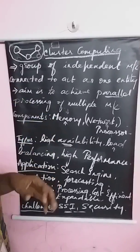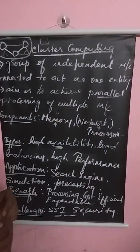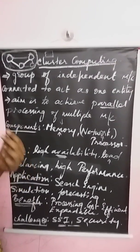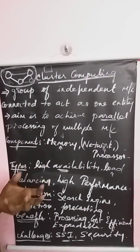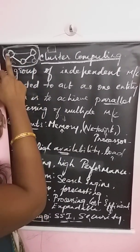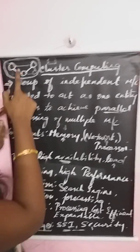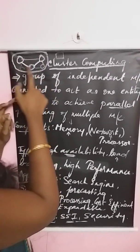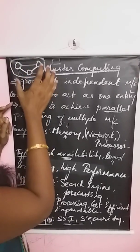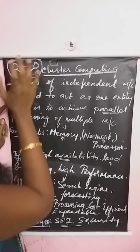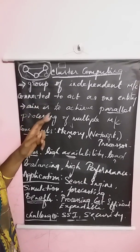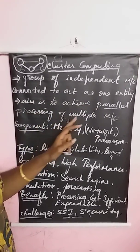Cluster computing is one form of computing where different independent machines are connected together and act as one single entity. Diagrammatically, it can be represented as different independent machines connected together over the internet, working like a single entity. The main motto of cluster computing is to achieve parallel processing across multiple machines.